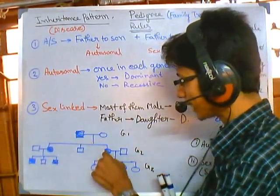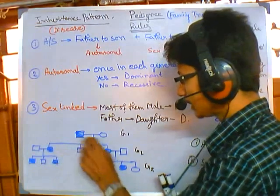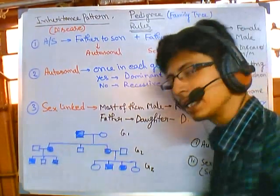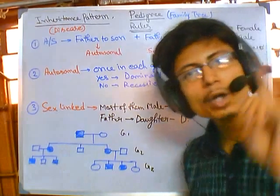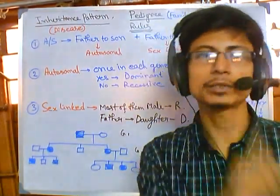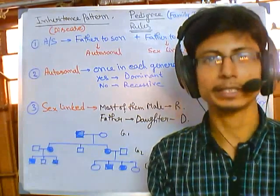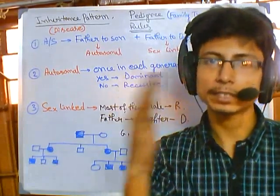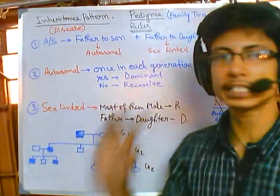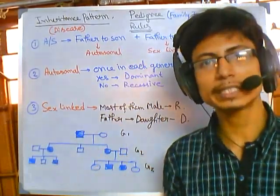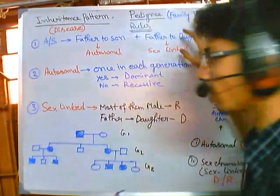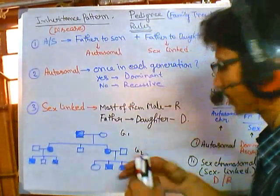In these three generations, what we observe is that this trait or inheritance pattern is coming from a father to daughter. If inheritance is coming from father to daughter, it must be sex-linked inheritance. No autosomal inheritance is transferred from father to daughter.